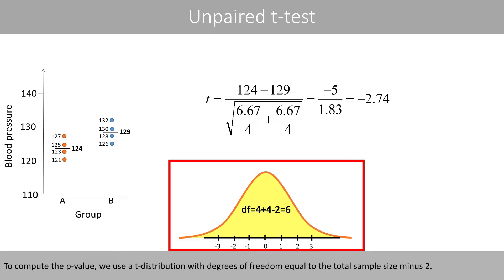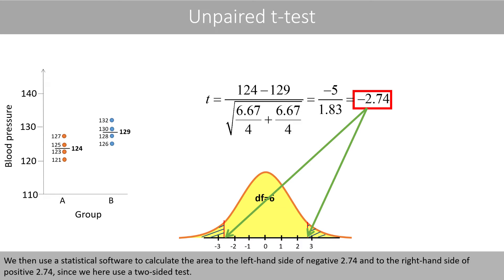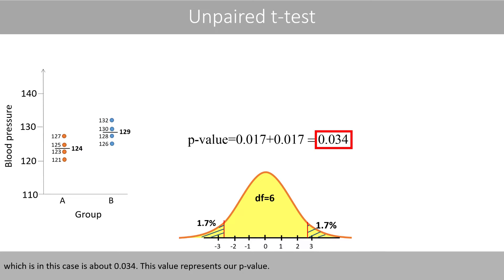To compute the p-value, we use the t-distribution with degrees of freedom equal to the total sample size minus 2. Since we have a sample size of 8, our degrees of freedom is therefore equal to 6. We then use statistical software to calculate the area to the left-hand side of negative 2.74 and to the right-hand side of positive 2.74, since we use a two-sided test. The corresponding p-value is therefore the sum of the area of these two tails, which in this case is equal to about 0.034.